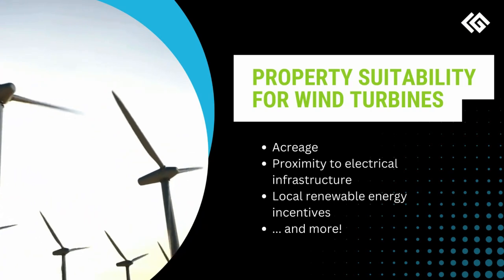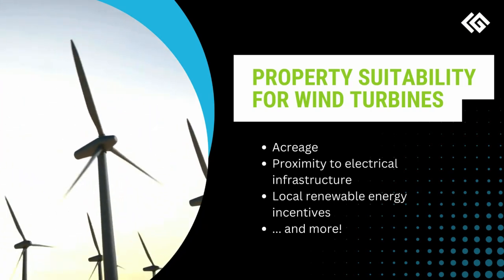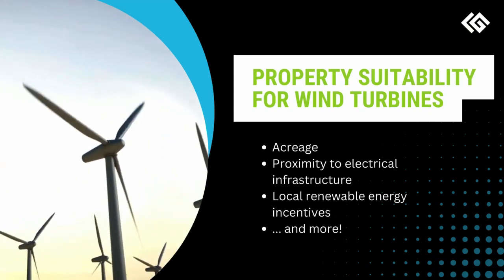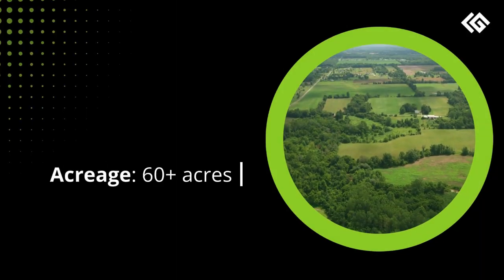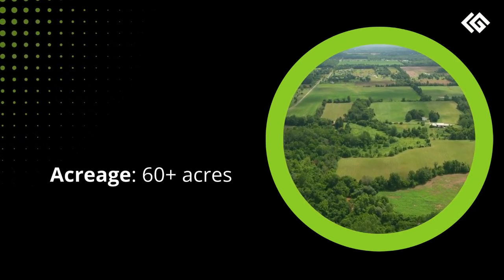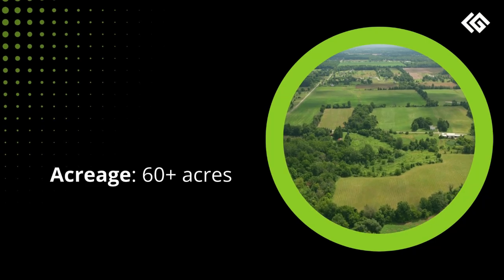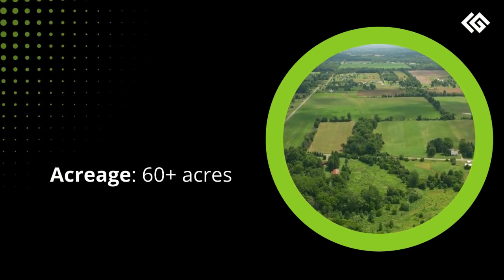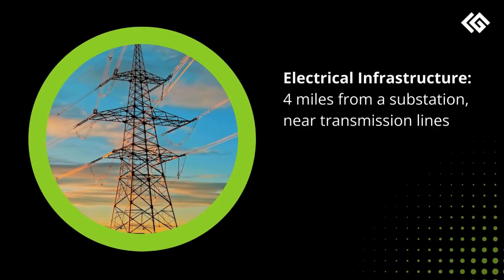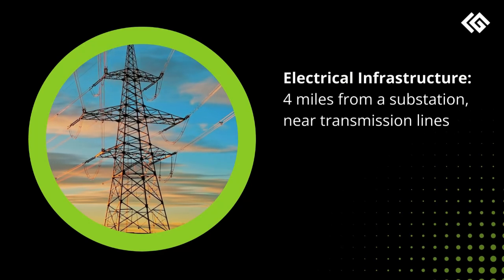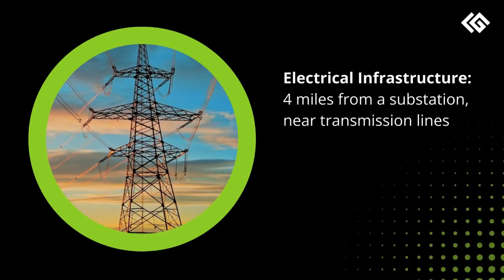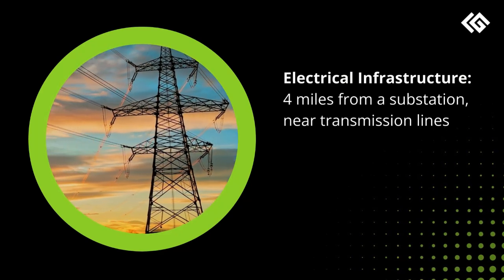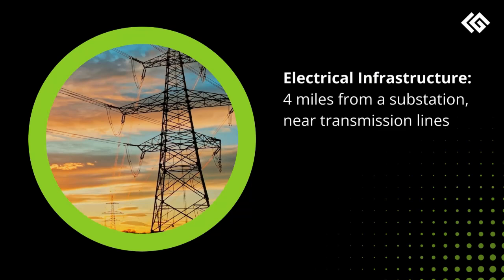These factors include acreage, proximity to electrical infrastructure, and local renewable energy incentives. Generally, properties with at least 60 buildable acres are usable for wind turbines, even though only a portion of the property will have the wind turbine infrastructure actually placed on it. Proximity to electrical infrastructure is another important consideration — the closer the transmission lines and substations to your property, the better. Less than four miles from a substation and near transmission lines is ideal.